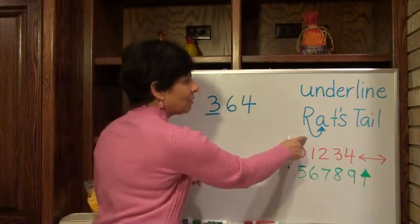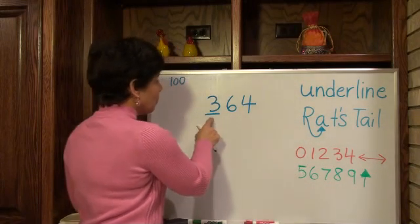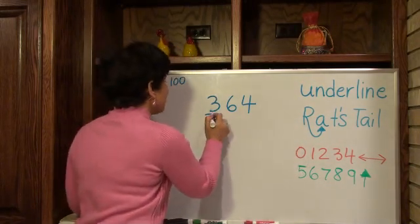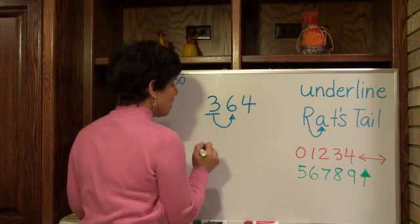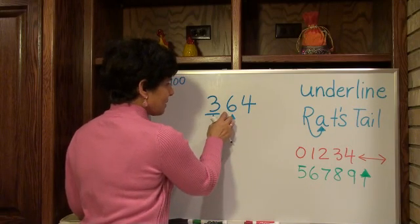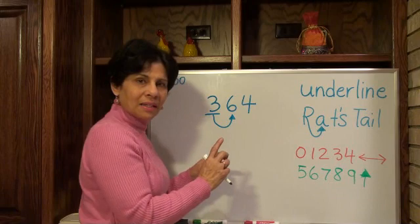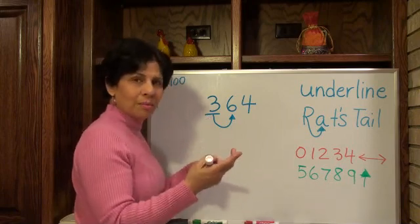Next thing, notice this rat's tail. Whatever your underlined number is, draw a rat's tail from there to the next number and that's a six. Now what I need to decide is, does the three stay the same or does it go up?